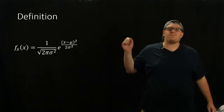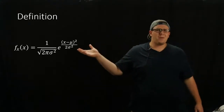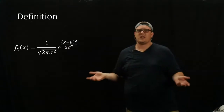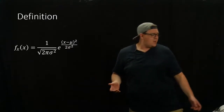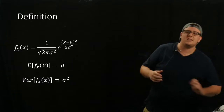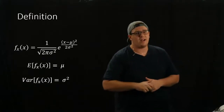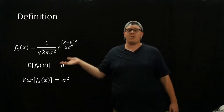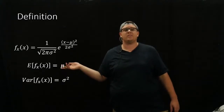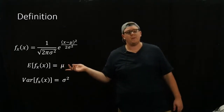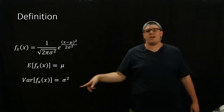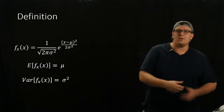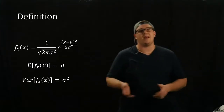You might be thinking: what is μ and what is σ? Well, they're not just any random things. They're actually defined as the mean and variance of this random variable. So if you know the mean, that value is what you put in for μ. And if you know the variance, that value is σ². So σ here is the standard deviation.